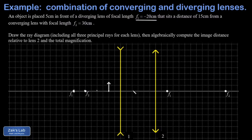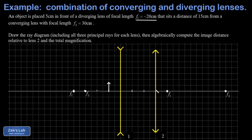I can do the same thing finding f1 to the right of the diverging lens — 5, 10, 15, and 20. Then our converging lens is 15 cm away from this diverging lens. That's 6 spaces away. And if I start at that converging lens and count spaces to the left and right, I'll find the focal length at 30 cm away.